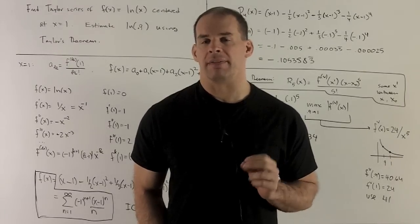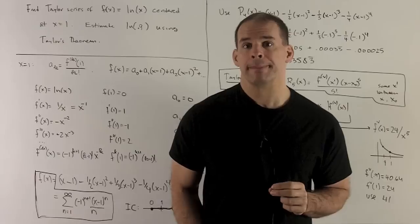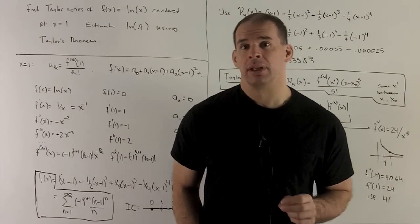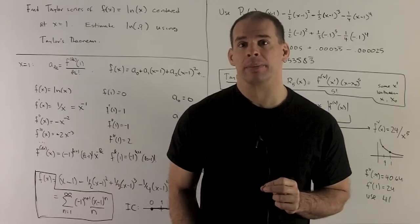Find the Taylor series for f of x equal to natural log of x, centered at x equals 1, then use that to estimate natural log of 0.9, then use Taylor's theorem to get a bound for the error of our estimate.